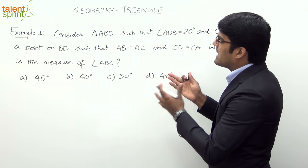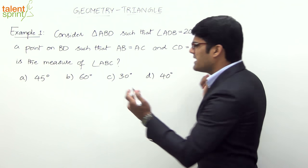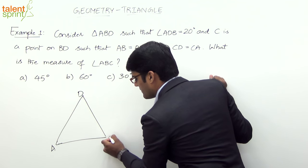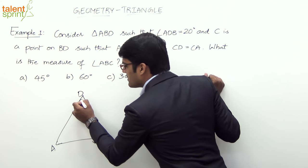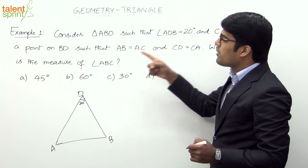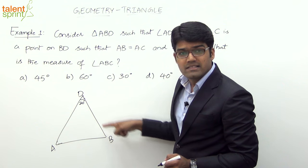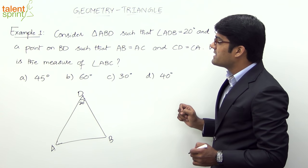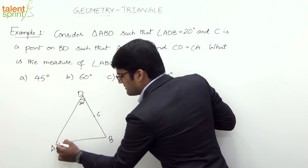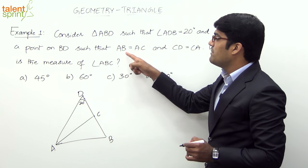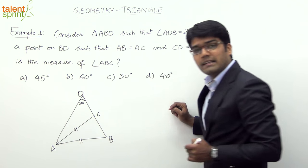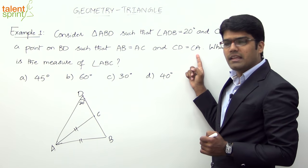It says there is a triangle ABD such that angle D is 20 degrees. Let us consider this triangle ADB, where angle D is 20 degrees. C is a point on the side BD. Let us take a point C on BD and connect AC. It says AB equals AC, which means side AB is equal to AC — so these two sides are equal.